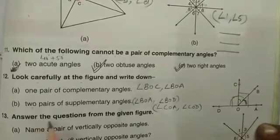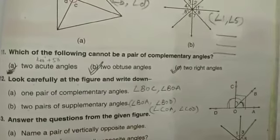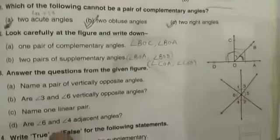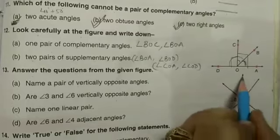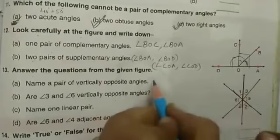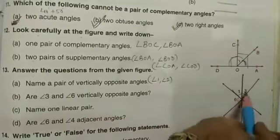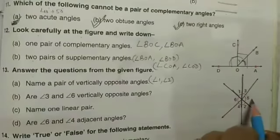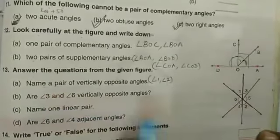Next, answer the questions from the given figure. Name a pair of vertically opposite angles. Look here, this line and this line crossing. So one and two. Or what else we can take? Angle 3, angle 4. Angle 5, angle 6. We have to name one pair, so I have written only one.